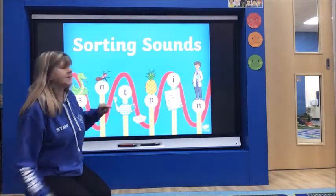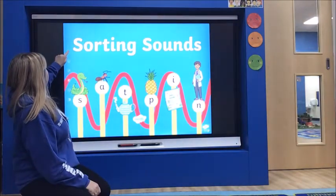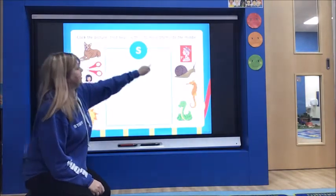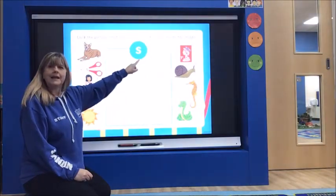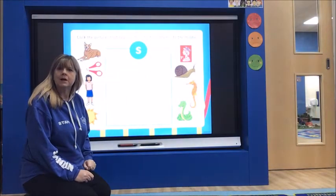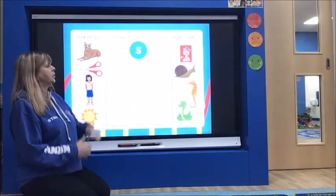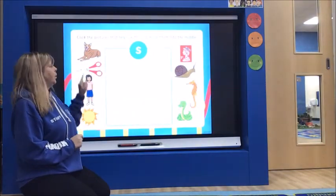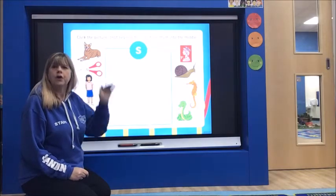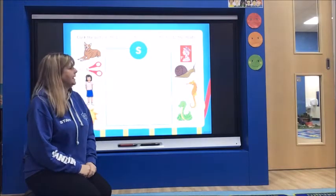So I've found another game for us to play. We've got a picture and we've got the letter S that makes the sound S. And we've got different objects on the board. And we need to work out which objects have got the S sound at the beginning.